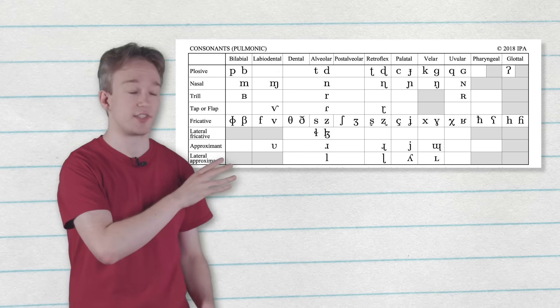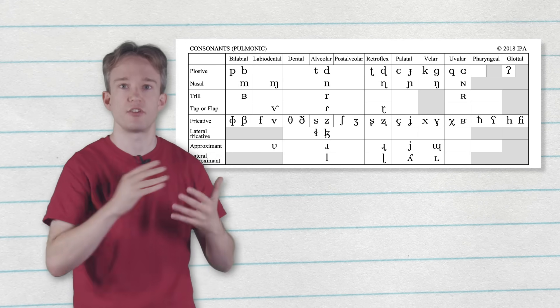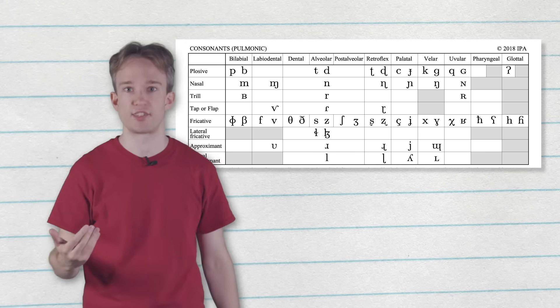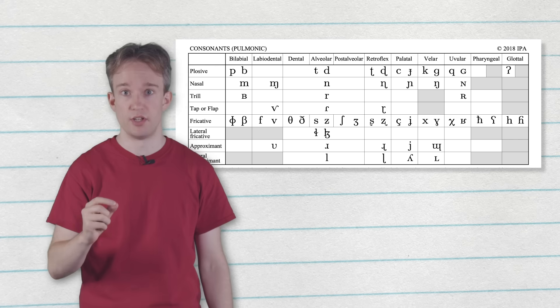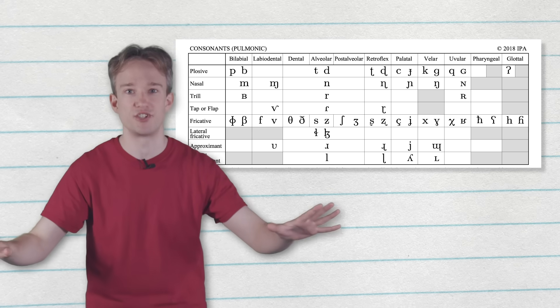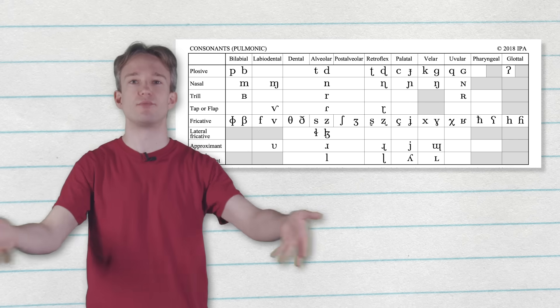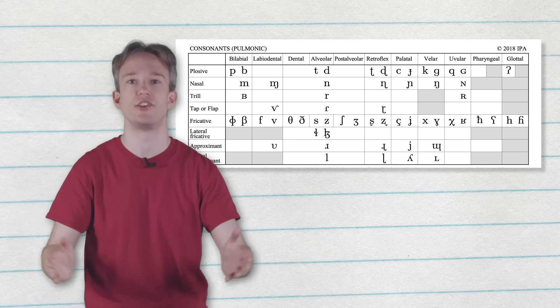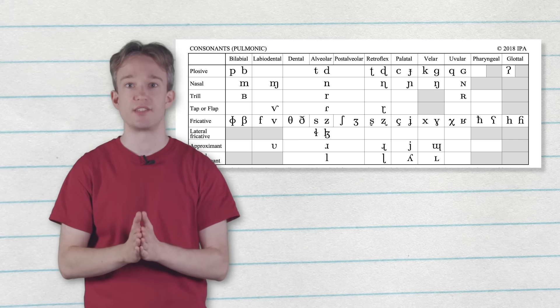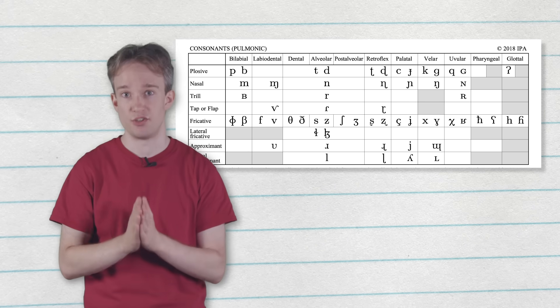All those shaded boxes have the same sorts of limitations, where it's not just that they would be difficult to pronounce. They are impossible. Those grey boxes are forbidden from human speech, not by choice of some High Council or the International Phonetic Association, but just because of the limitations of being human.